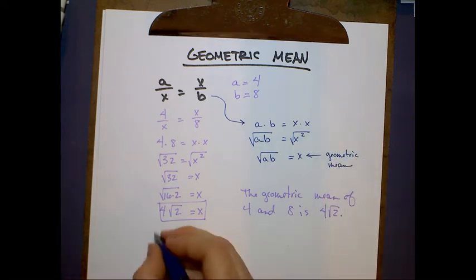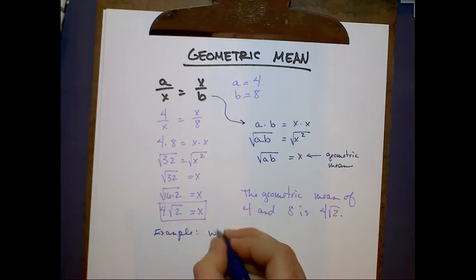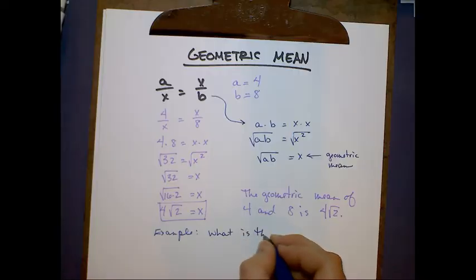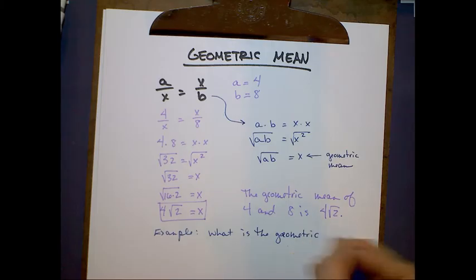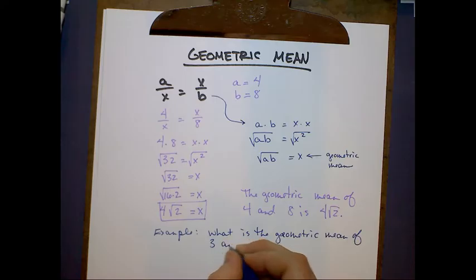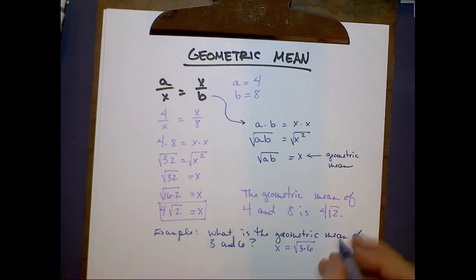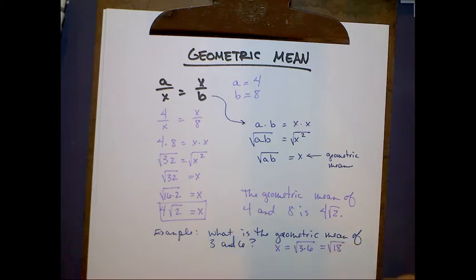So, let's do a little example problem. What is the geometric mean of 3 and 6? Well, if we use this equation that we see up here, we know that the geometric mean is equal to the square root of the product of these two numbers, 3 times 6. To simplify this, we get the square root of 18.